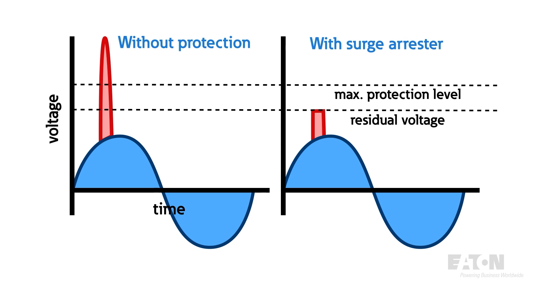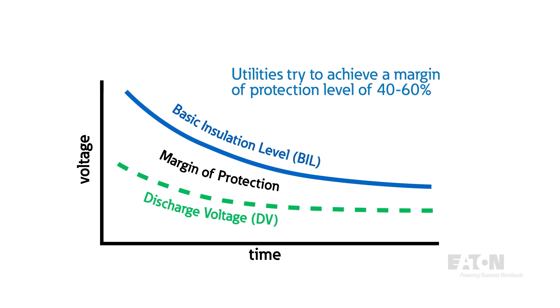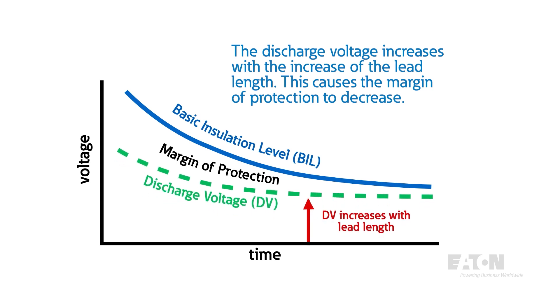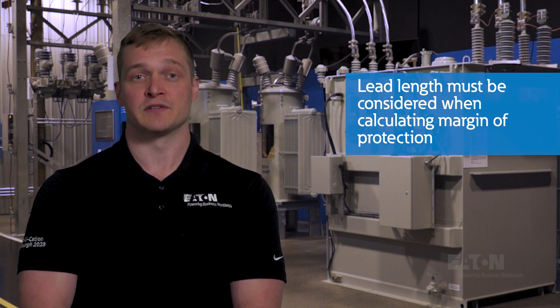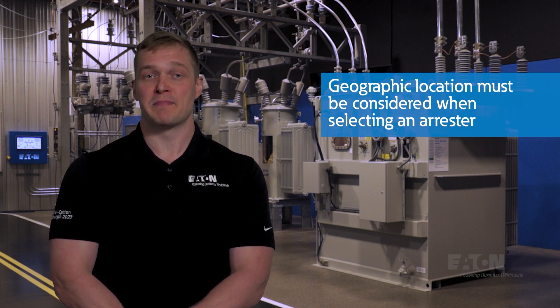Utility engineers need to ensure that the discharge voltage is lower than the basic insulation level, or BIL, of the protected equipment. The difference between these two values is known as the margin of protection. Every utility is different, but most try to achieve a margin of 40% to 60%. Like in residential applications, the lead length will affect margin of protection. Fast transients often have large voltage drops across conductors, so it must also be taken into consideration when calculating margin of protection.